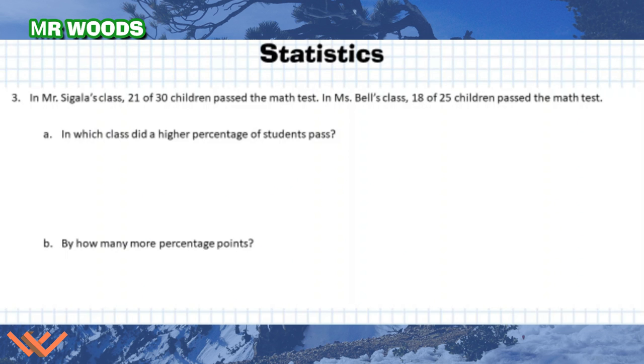Number three, in Mr. Segala's class, 21 of 30 children passed the math test. In Ms. Bell's class, 18 of 25 children passed the math test. A, in which class did the higher percentage of students pass? And then B, by how many more percentage points? So what we need to do is we need to find what's the percentage, I want to say the average percentage, because it's looking for the class that had a higher percentage of students pass. And so we have to look at the percentages and such.